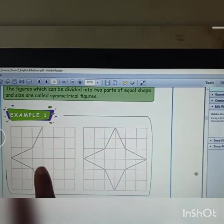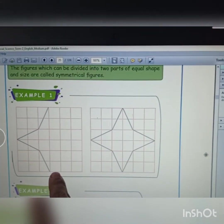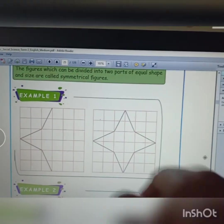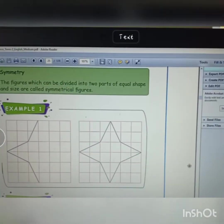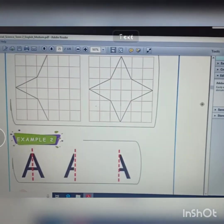In the middle, divided into two parts. Two parts are divided. So, the figure which can be divided into two parts of equal shape and size are called symmetrical figures.